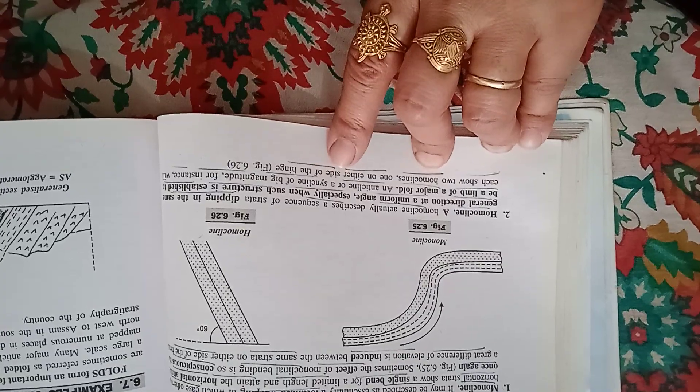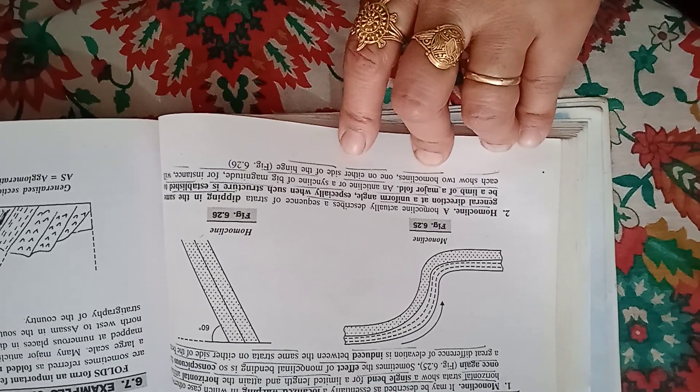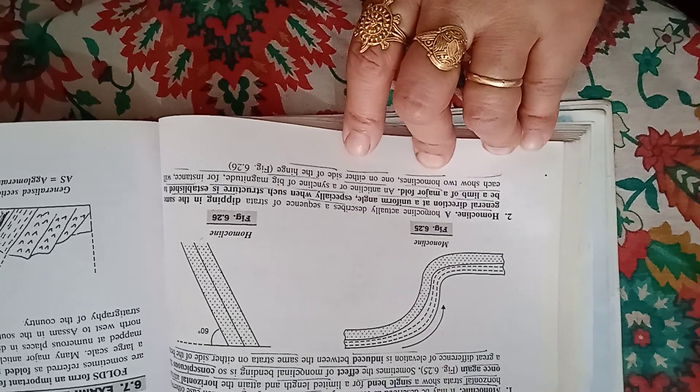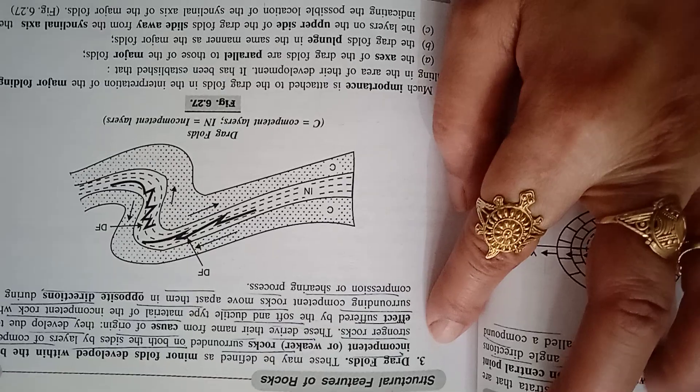For instance, you will observe two homoclines, one on either side of the hinge. Drag folds: